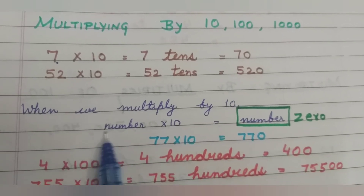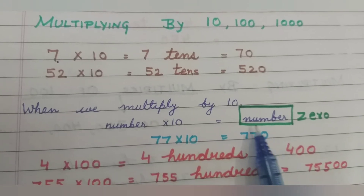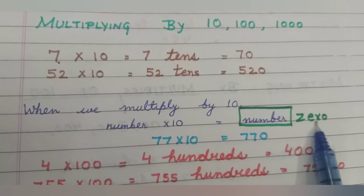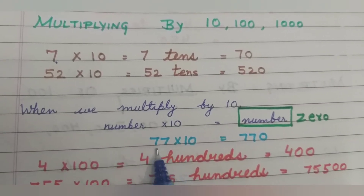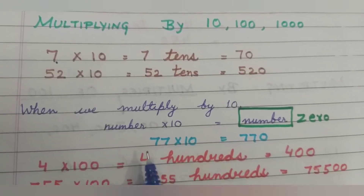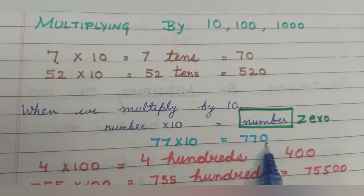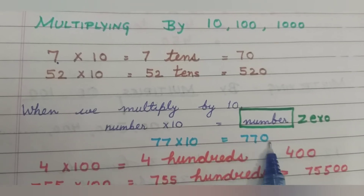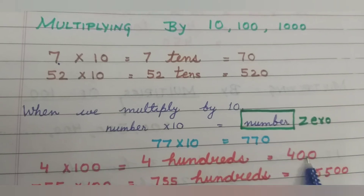You can see: when we multiply any number by ten, we write that number and then put one zero. For example, the number is seventy-seven. Seventy-seven multiplied by ten equals seven hundred seventy — we write seventy-seven and then add one zero. So this is what happens with ten.